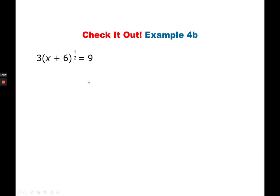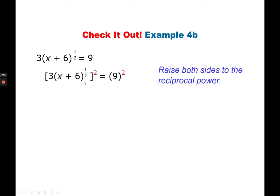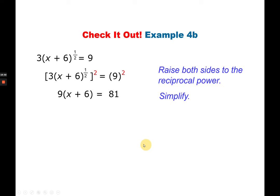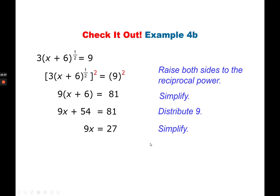Here's a different method: instead of writing it in radical form, you can directly raise both sides. To make the exponent 1, if the exponent is 1/2 you raise both sides to 2, because 1/2 times 2 equals 1. But 3 raised to 2 becomes 9, and 9 squared is 81. This cancels the exponent on the x plus 6 side, but the 2 is also a power of 3, which is why it becomes 9 squared equals 81. Simplify by distributive property: 9x plus 54 equals 81. Subtract 54 from both sides: 9x equals 27. Divide both sides by 9: x equals 3.